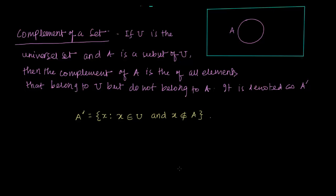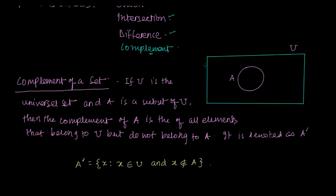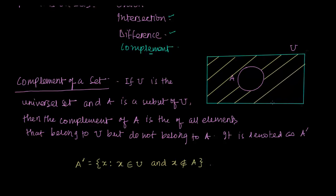If I try to represent it on a Venn diagram, the complement represents this region — everything here. Every element that belongs to U but does not belong to A is the complement of the set.